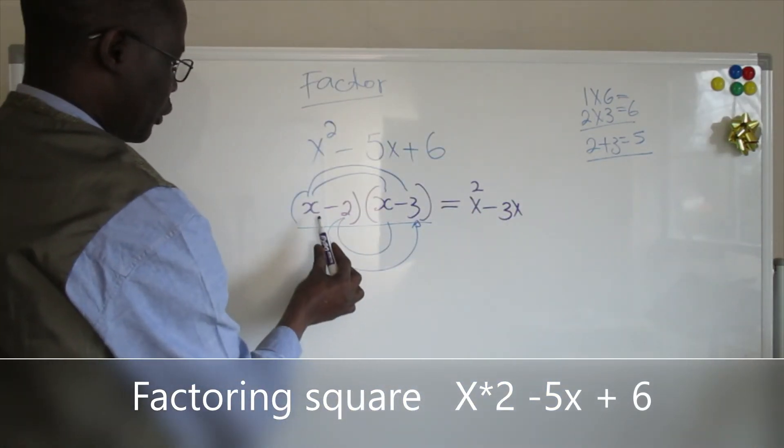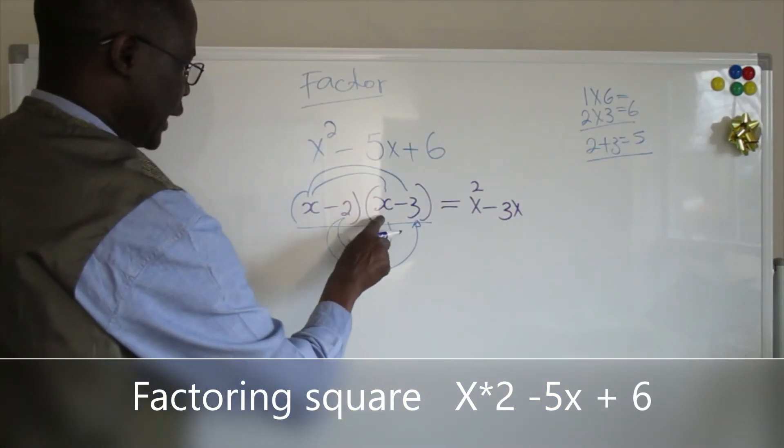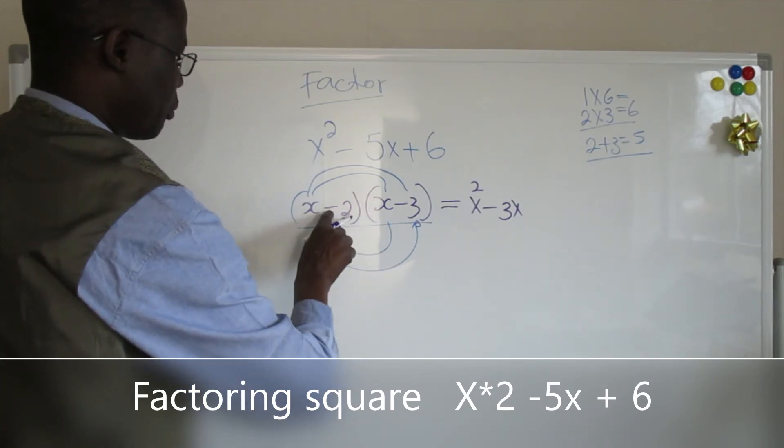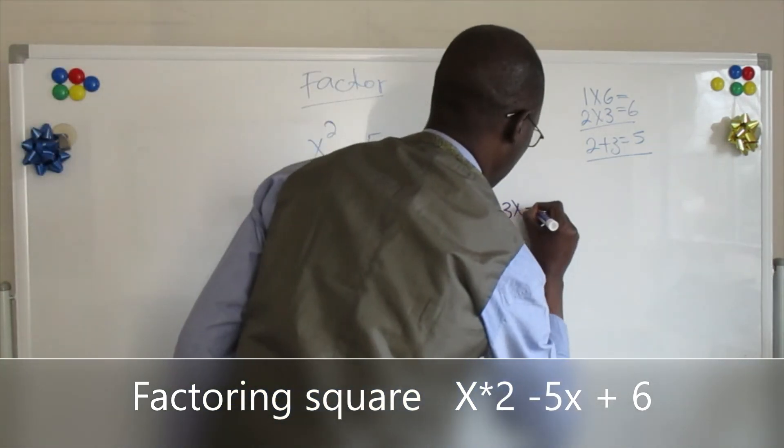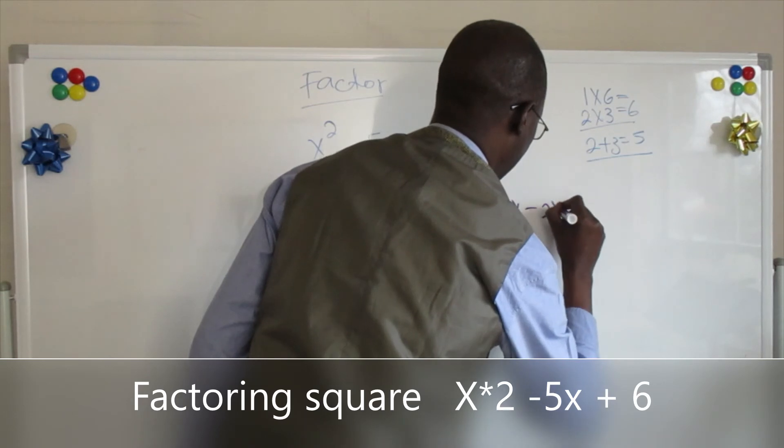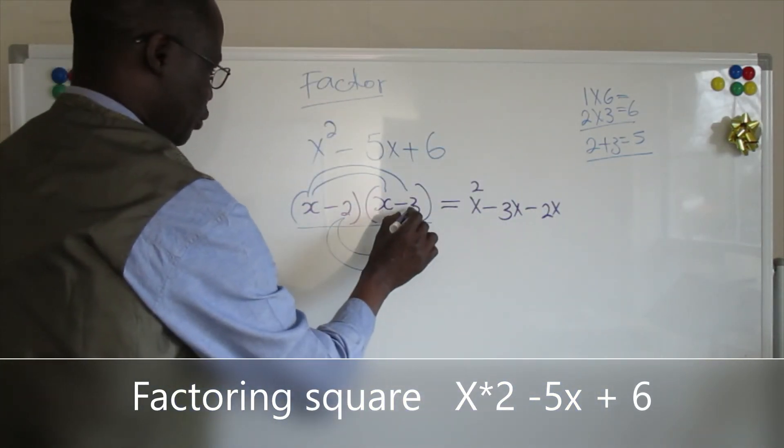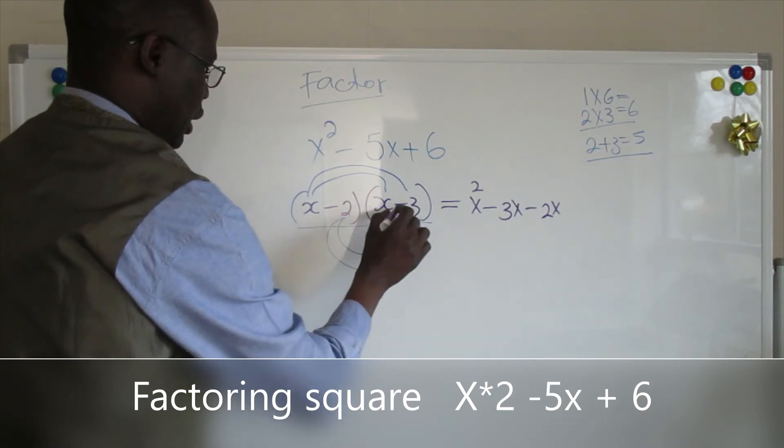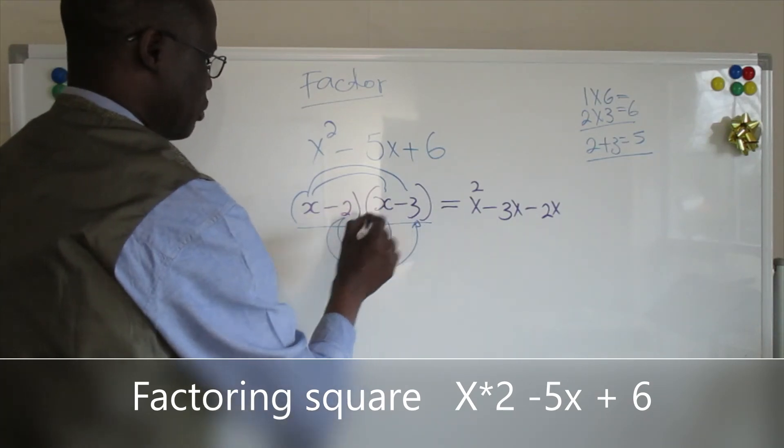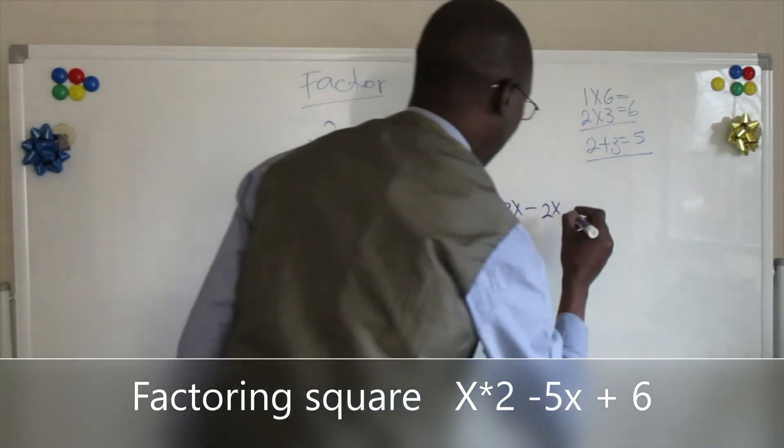So we're done with the first one. The second one we're going to do negative 2 times x, so it's minus 2x, and negative 2 times negative 3, and we know minus times minus we got positive 6.